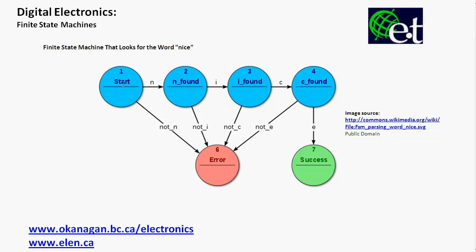We have a start state, and if an 'n' is found as the first letter, then we go to the 'n found' state. If an 'i' is the next letter, we go to the 'i found' state. But if a 'c' is not the next letter, then we go to the error state — we didn't find the word 'nice.' You see all the blue circles, red circles, and green circles — these are all the different states, and we've got different rules for changing from state to state.